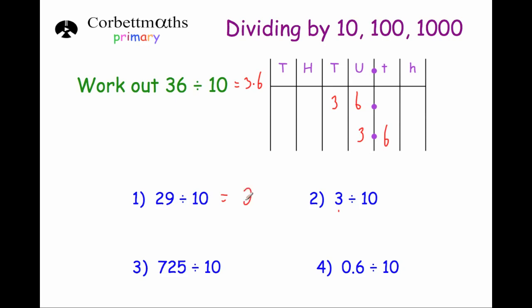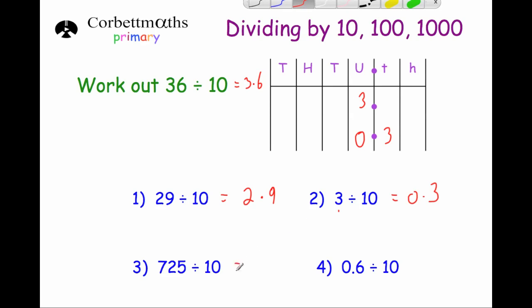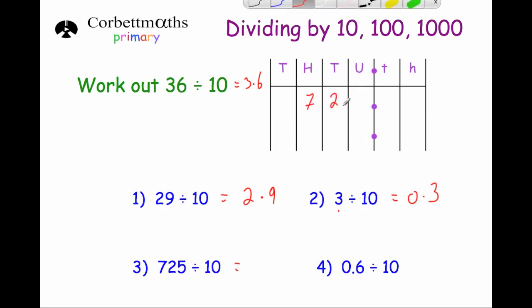The 20 becomes 2 and the 9 units become tenths, giving 2.9. If we had just 3 in the units and divide by 10, it moves one column to the right so the answer is 0.3. If we had 725 divided by 10, all digits move one column to the right — the 7 moves to tens, the 2 moves to units, and the 5 moves to tenths — so 725 divided by 10 is 72.5.